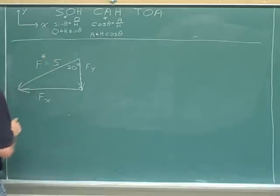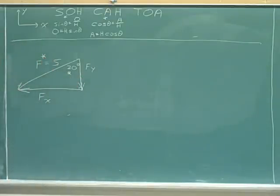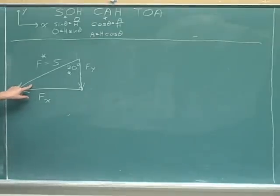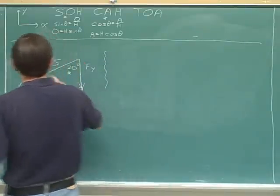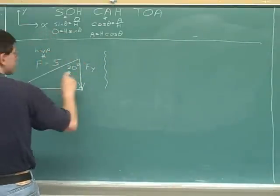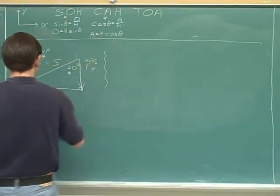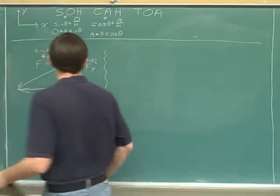Let's asterisk the side we were given and the angle we're focusing on. We usually focus on the angle we were given. There's the hypotenuse, the adjacent side, and the opposite side.